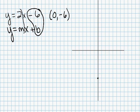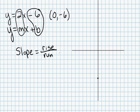The m tells me the slope. Slope means the rise over the run. So in this case, if I make 2 into a fraction, it's 2 over 1. So the rise is 2 and the run is 1.